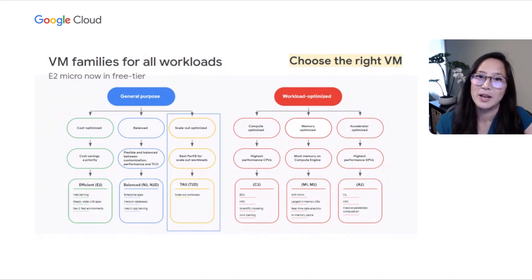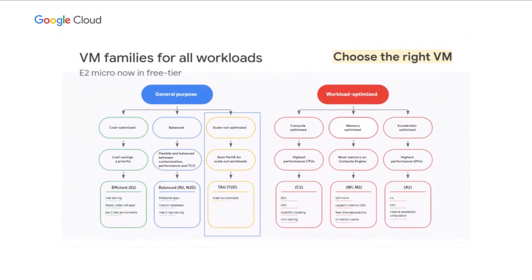Our new Tau VMs are built for scale-out applications and deliver 42% better price performance among the leading cloud providers. We have various machine families depending on your use case: high performance, high memory, accelerator optimized. Bottom line, to optimize on both cost and performance, it's important to choose the right VM for your workload. To learn more about VM rightsizing, check out INF300 at Next.